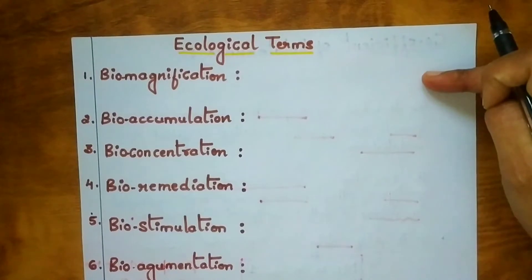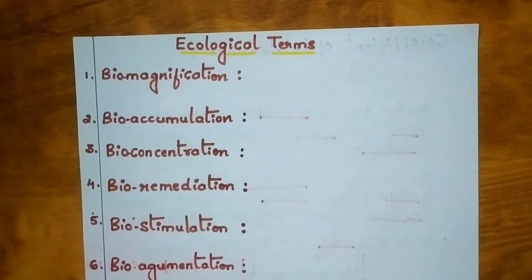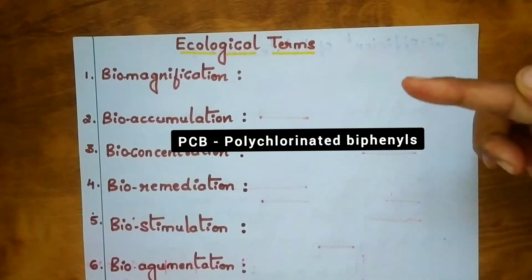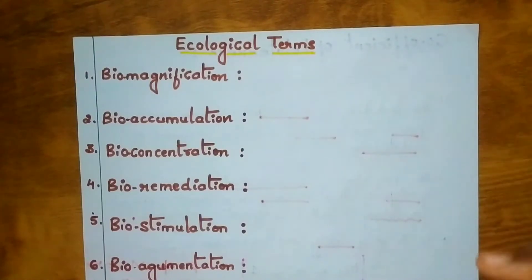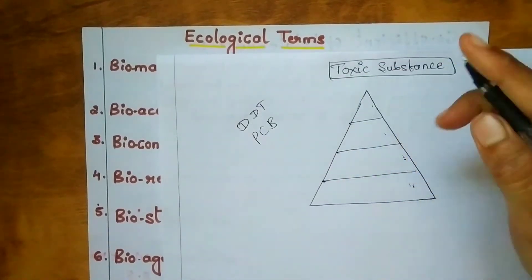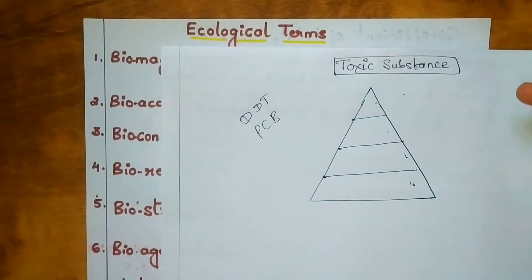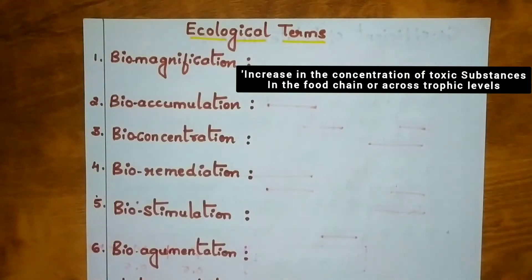For example, you can give the example of DDT and PCB. DDT is dichlorodiphenyl trichloroethane and PCB is polychlorinated biphenyl. These toxic substances finally accumulate at the top consumers — tertiary consumers, carnivores, or omnivores. These chemicals get accumulated in the higher organisms.